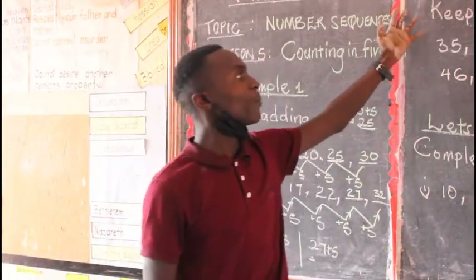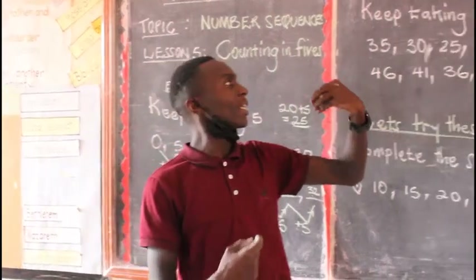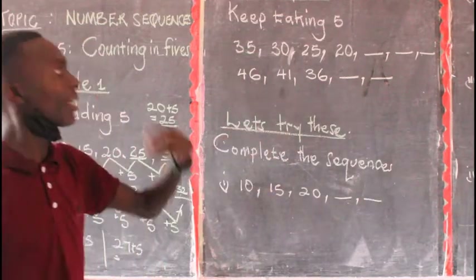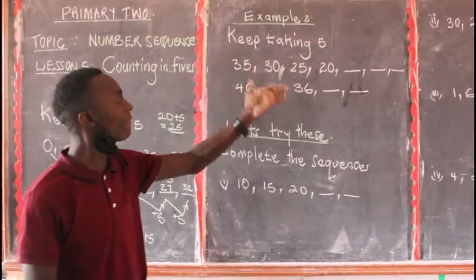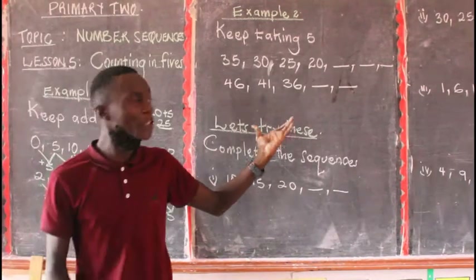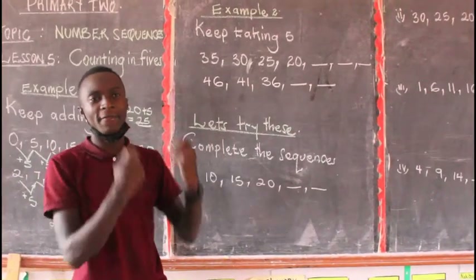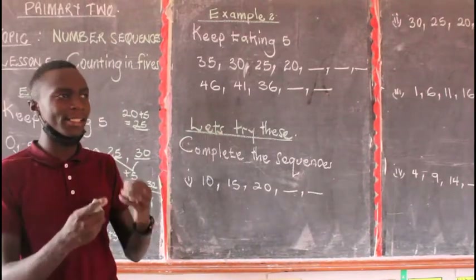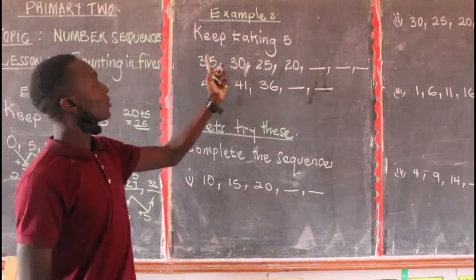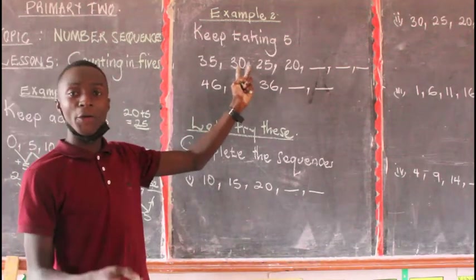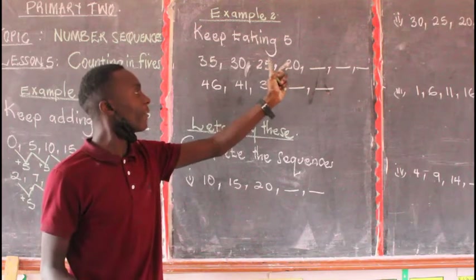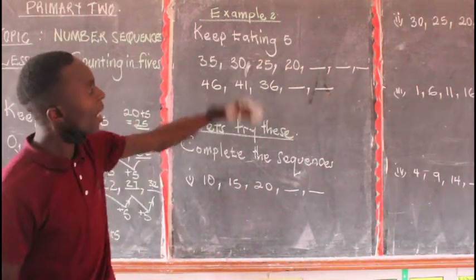Now we have Example 2. This time we are going to keep on taking away 5 — we are subtracting 5. Taking is reducing. From 35 to 30, someone reduced 5. From 30 to 25, someone reduced 5. From 25 to 20, someone again reduced 5.